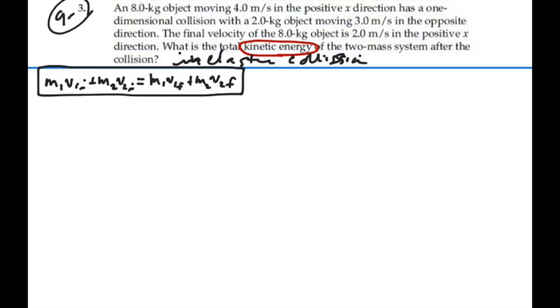Let's kind of visualize what might be going on here. We have mass 1, which is 8 kilograms, moving initially, V1 initial, at 4 meters per second in the positive x direction.